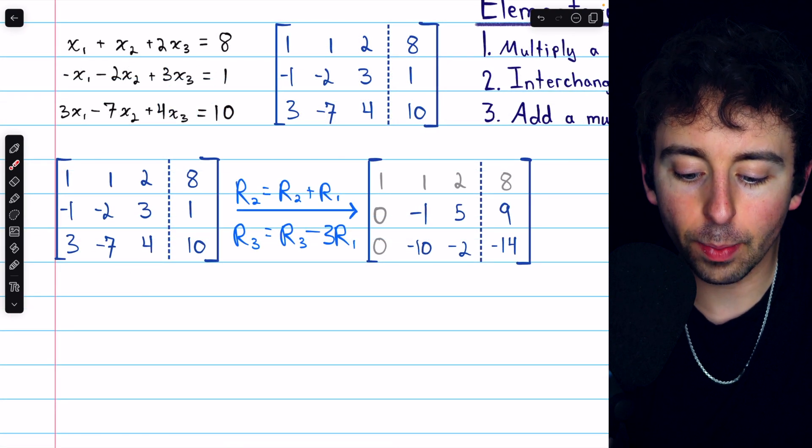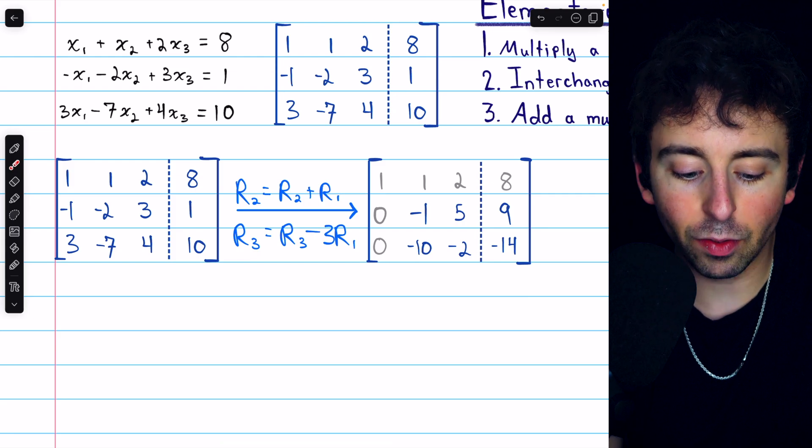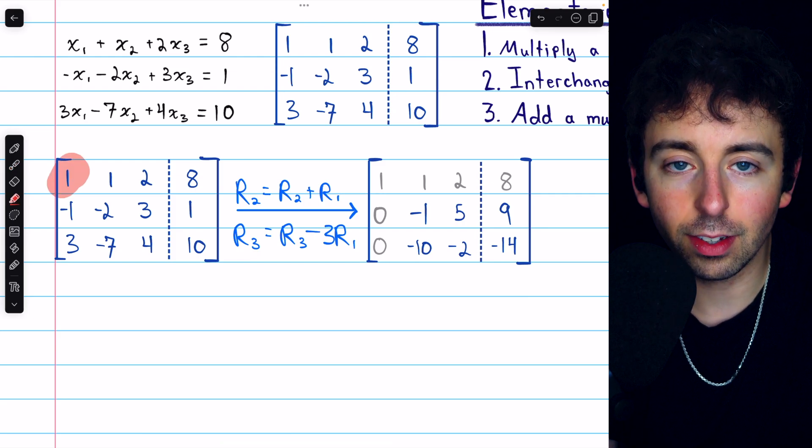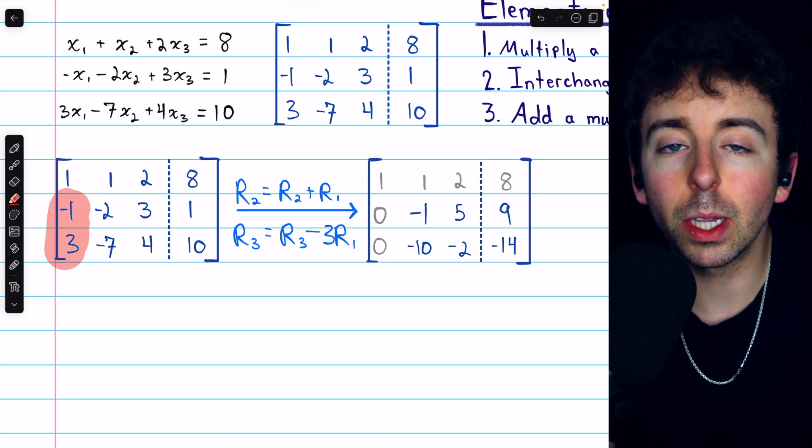So here is our augmented matrix. Let's think about the first two steps we want to make. We already have a 1 here, which is exactly what we want, but we want to get 0s below the 1.